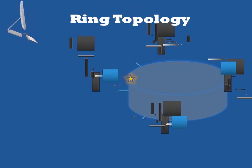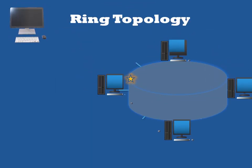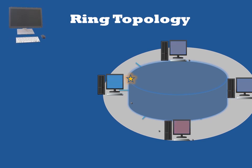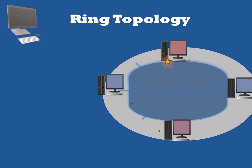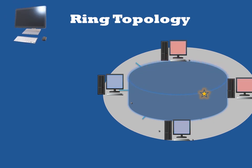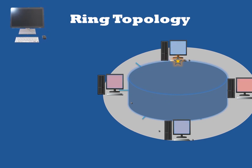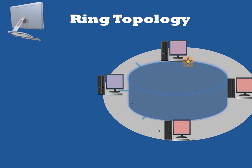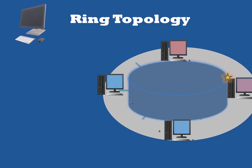A ring topology is a network configuration in which device connections create a rounded data path. Each network device is linked to two others, like points on a circle. Together, devices in a ring topology are referred to as a ring network. In a ring network, packets of data travel from one device to the next until they reach their endpoint.